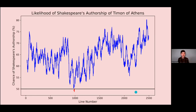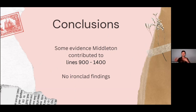Moving to our graph for Timon of Athens: it almost always stays above the 50 percent line, generally predicted as written by Shakespeare. But there's an interesting middle section between about lines 900 and 1400 that comes a lot closer to Middleton's word choice than the rest of the play — we don't see that in any other plays the model was trained on. Given that the model tends to under-predict Middleton, this section is worth further investigation. Overall we see a strong difference in word choice in lines 900 through 1400 of Timon of Athens, pointing to the possibility that Middleton either wrote or contributed to that section.